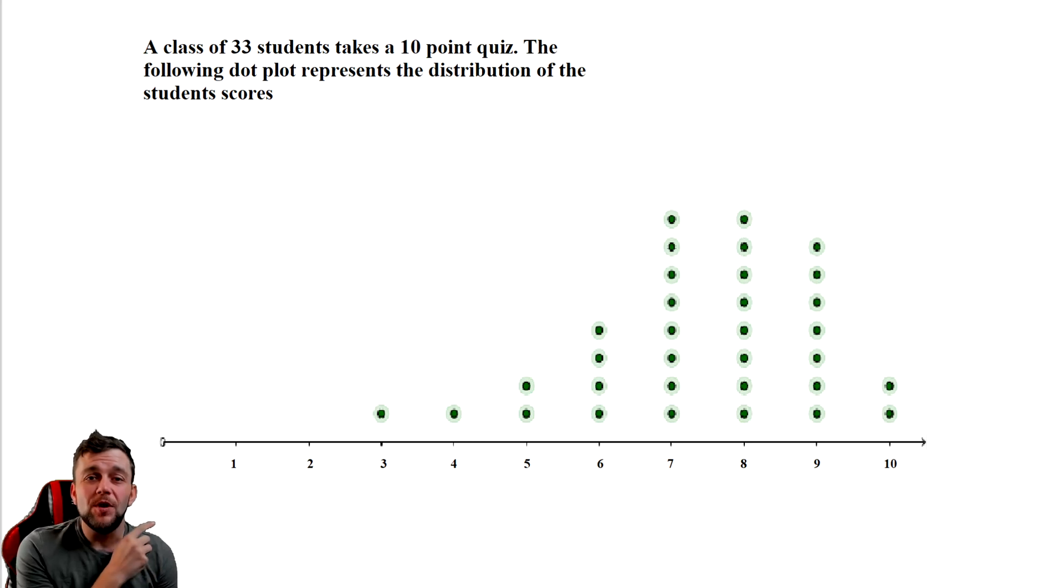Here we have our first example of a dot plot. Notice that it's on a number line of 1 through 10 and there are green dots above different values on that number line. The total number of green dots above that number line represents how many of those points are in your data set. When we read the statement above the dot plot, we have a better understanding of what's happening with this statistical diagram.